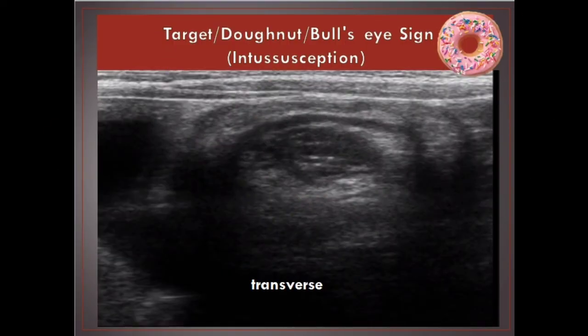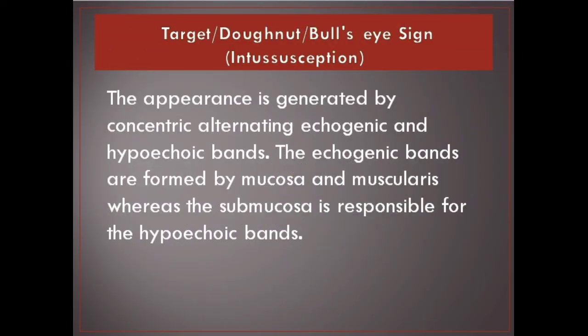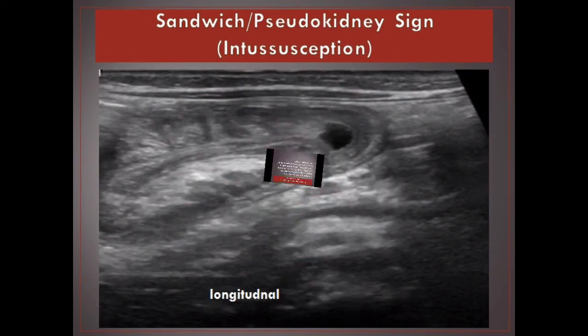Target / Donut / Bullseye sign. The appearance is generated by concentric alternating echogenic and hypoechoic bands. The echogenic bands are formed by mucosa and muscularis, whereas the submucosa is responsible for the hypoechoic bands.